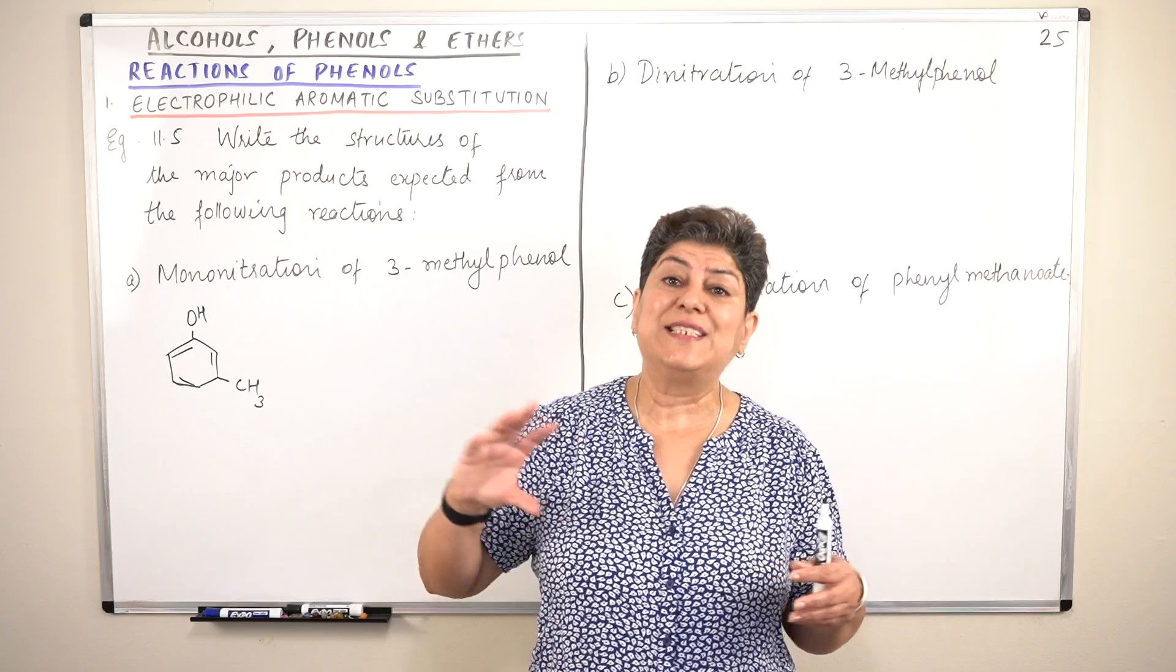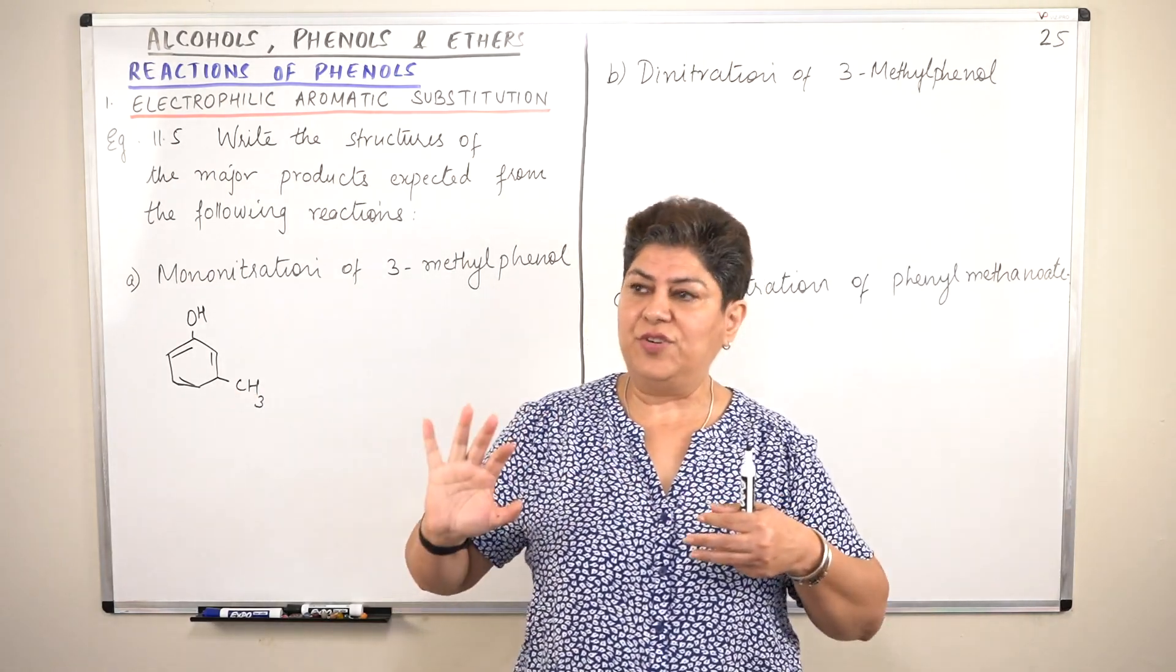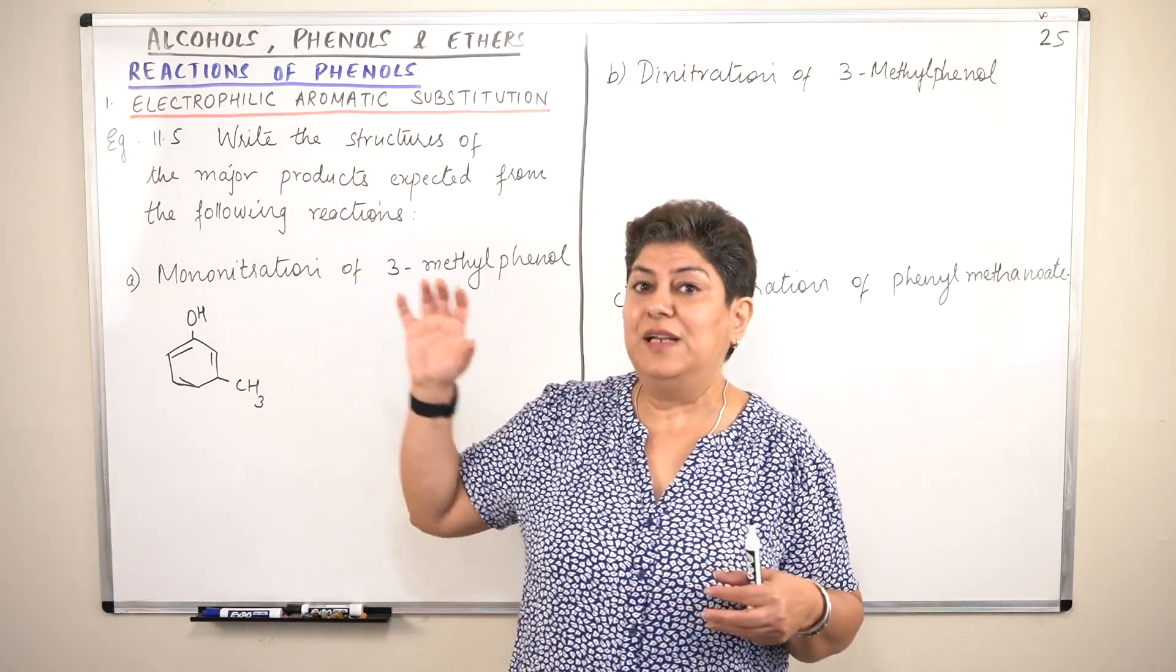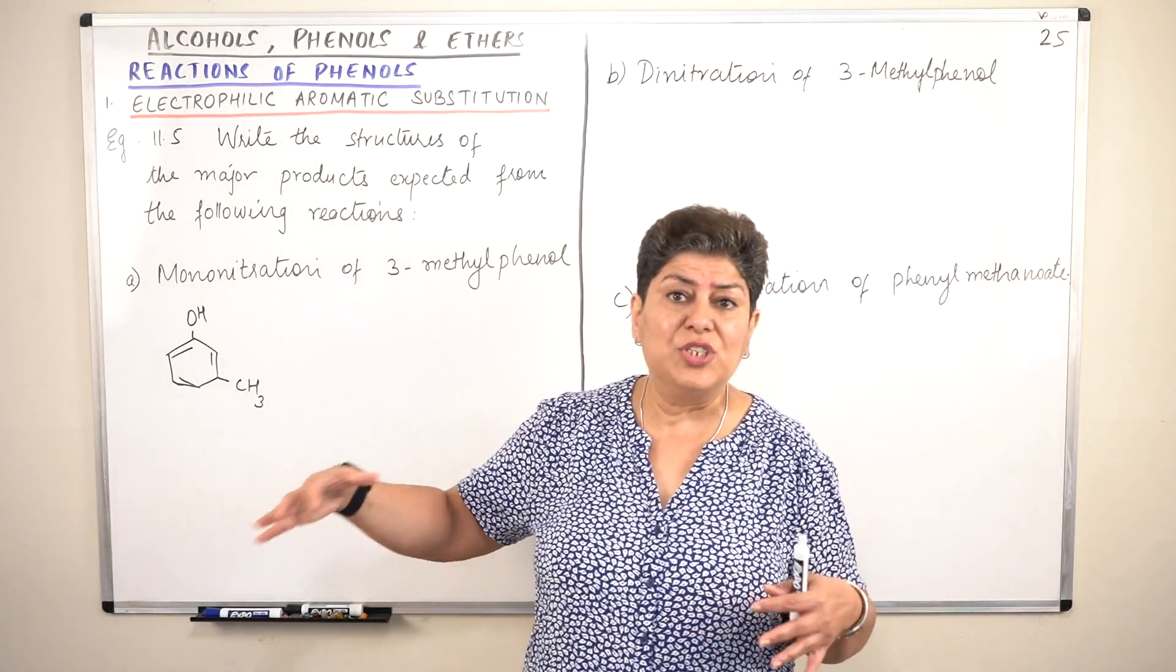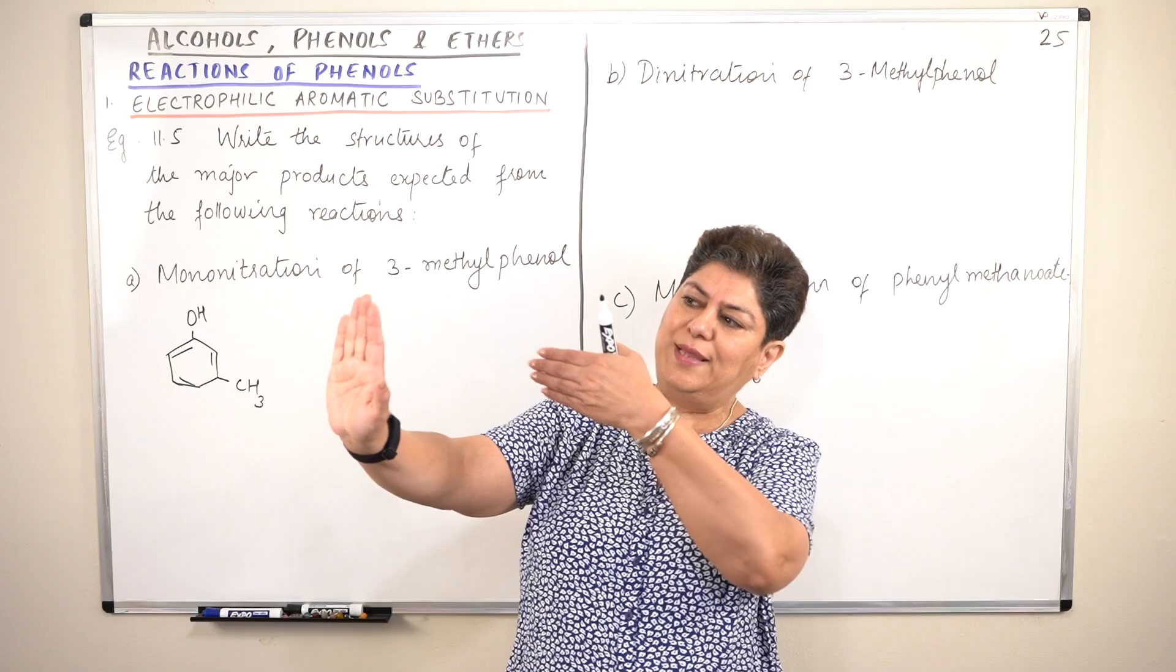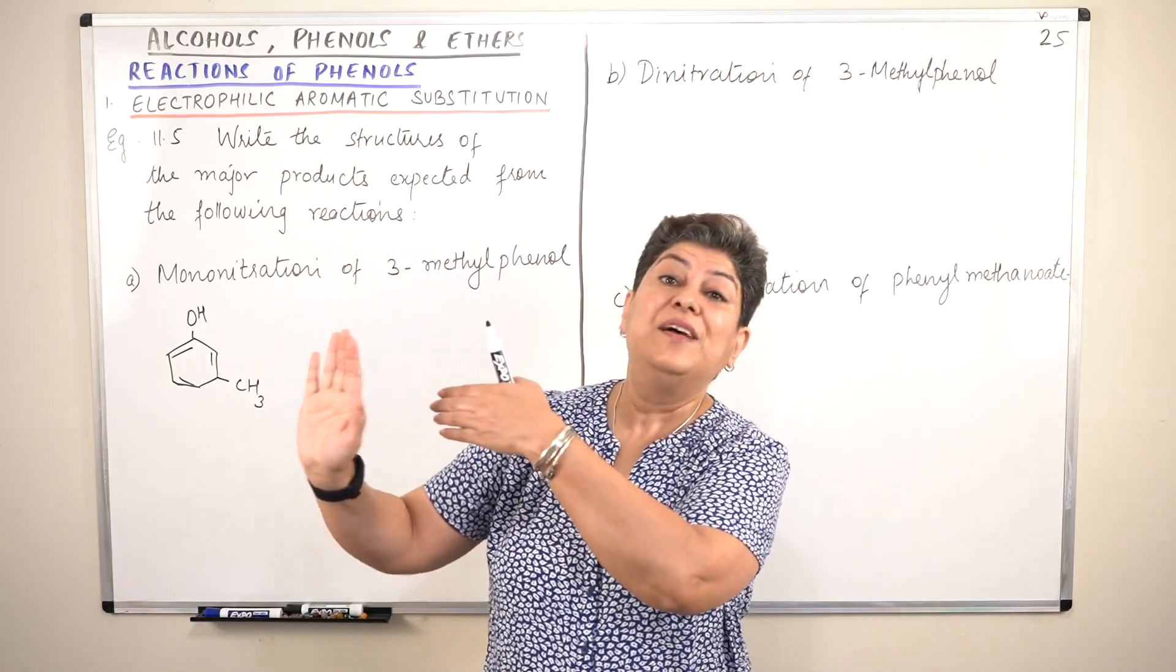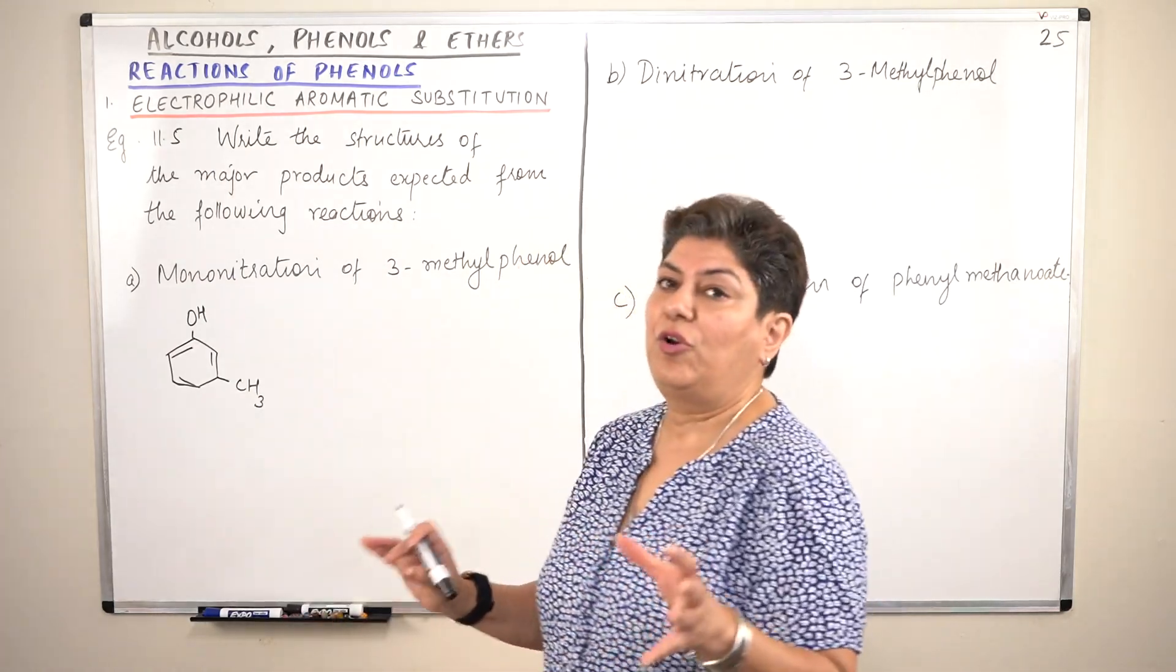That is what's called steric hindrance. Steric is when there is too much clutter and hindrance because of that, that there would be repulsion. The group will kind of repel the incoming group. After all, all of these have electrons around them, and the electrons when they come in close contact with the electrons of the incoming group, there can be repulsion. There can be other reasons of repulsion also, but we are not going deep into it.